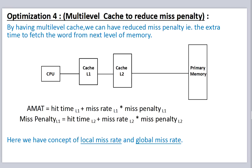Next we have the optimization of multi-level cache to reduce miss penalty. By having multi-level cache, we can reduce miss penalty, that is the extra time to fetch the word from the next level of memory. Average memory access time equals hit time of L1 cache plus miss rate of L1 into miss penalty of L1, where miss penalty of L1 equals hit time of L2 plus miss rate of L2 into miss penalty of L2.